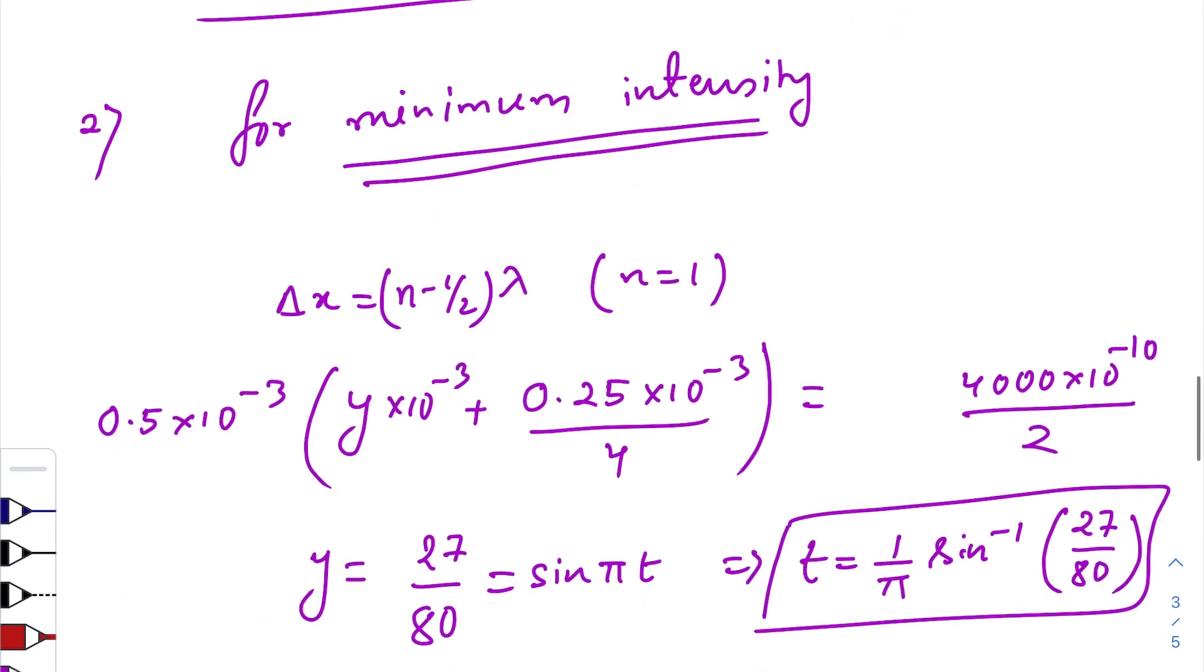Now the minimum intensity. Similarly, for minimum intensity, it should be a half integral multiple of lambda and this is the general equation. For n equals to 1, it should be lambda by 2.